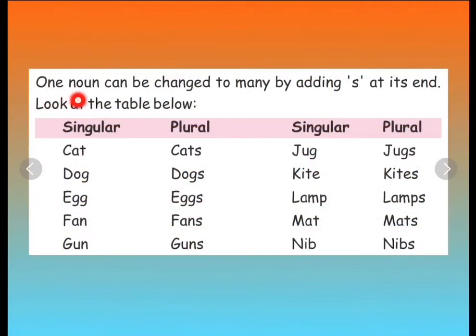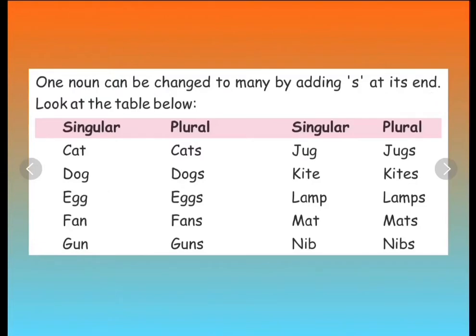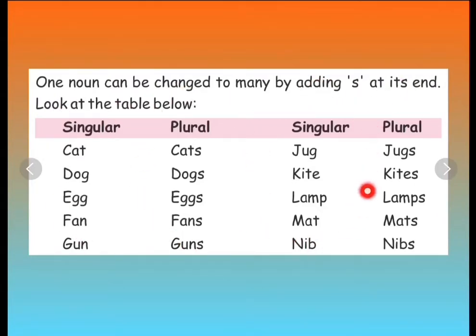One noun can be changed to many by adding S at its end. So you can see a table of singular nouns and their plurals. Let us read them aloud. Cat. Cats.